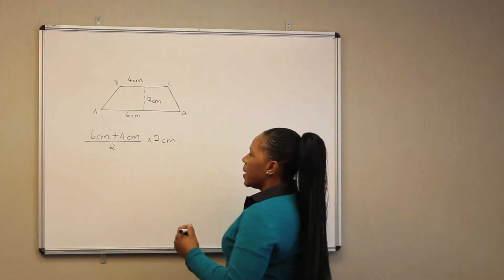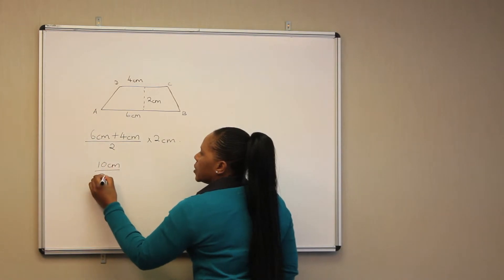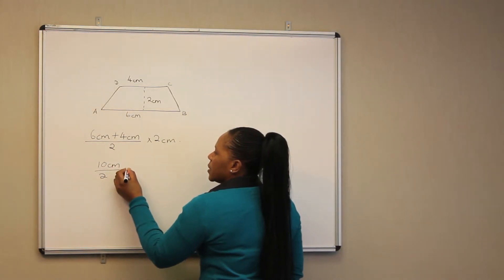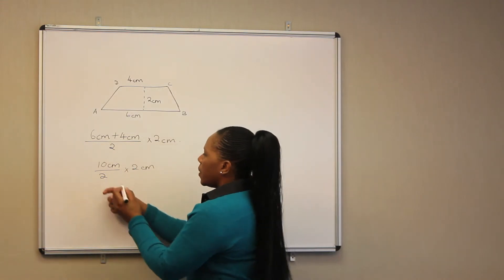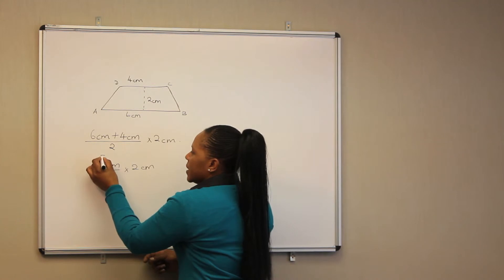So 6 plus 4 is 10 cm divided by 2 multiplied by 2. Which is 2 into 2, 1, 2 into 10 is 5.